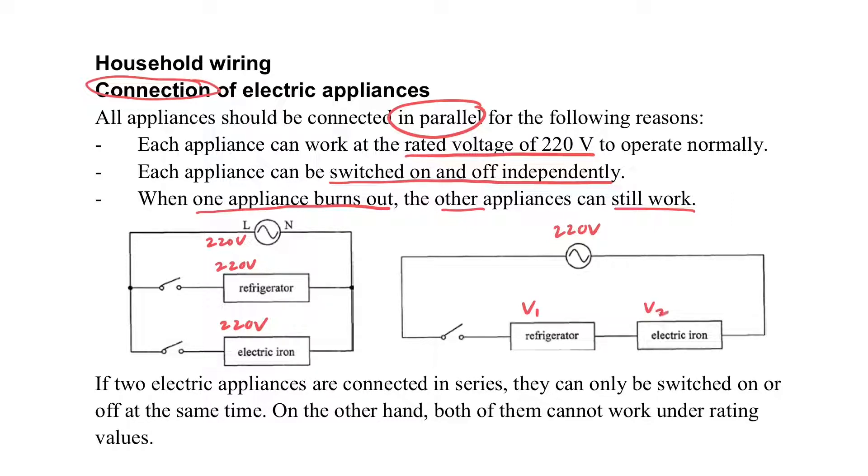However, if they are connected in series, what will happen? You can see that because in series, they will share the voltage according to their resistance. So each of them will not be able to get 220V in this case. Both of them will get lower than 220V.